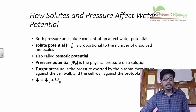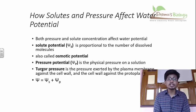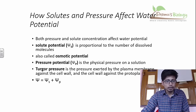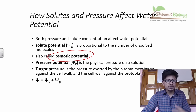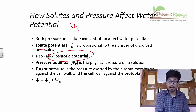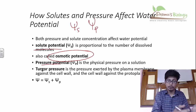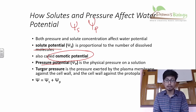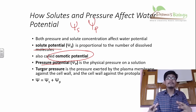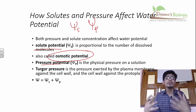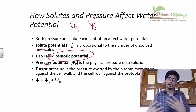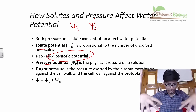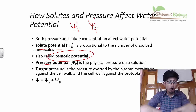Zero MPa is for pure water at sea level at room temperature — that's water potential. Water potential is the measurement of pressure created by the water. There are different components: solute potential (ψS) and pressure potential (ψP). Solute potential is proportional to the number of dissolved molecules present — if you have a high concentration of dissolved molecules, solute potential increases and water potential also increases. Pressure potential is the physical pressure applied on a solution, not by the solution.